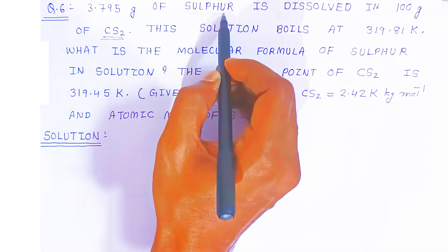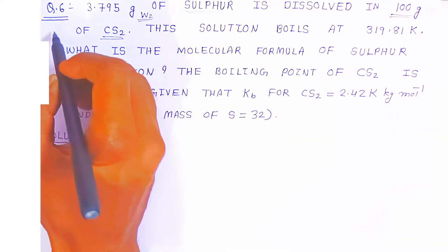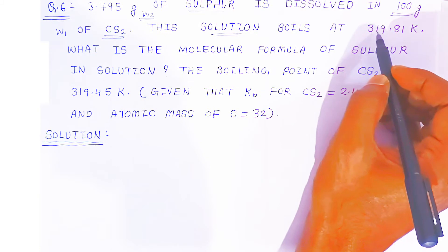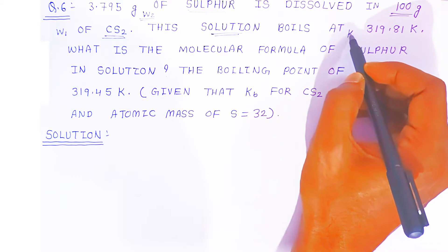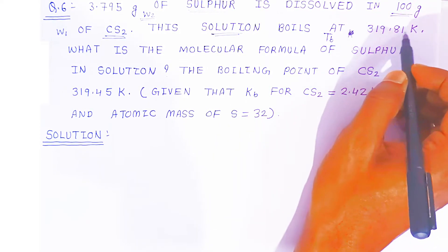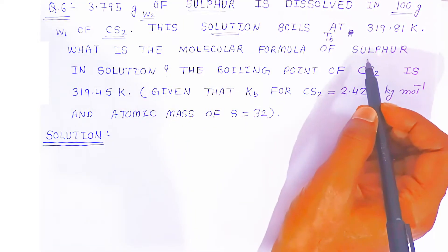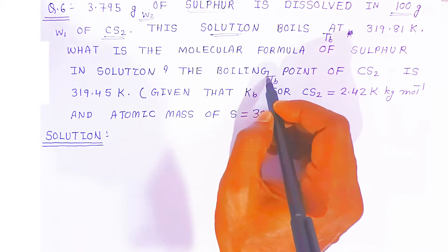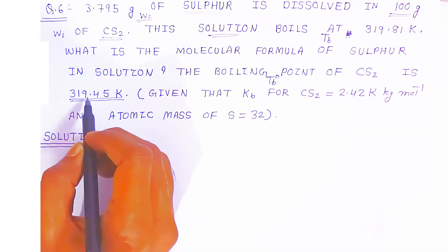Carbon disulfide is the solvent and sulfur is the solute. The weight of sulfur W₂ is given, and the weight of solvent W₁ is 100 gram. This solution boils at 319.81 Kelvin, which is the boiling point of the solution Tb. The boiling point of pure carbon disulfide T⁰b is given as 319.45 Kelvin.